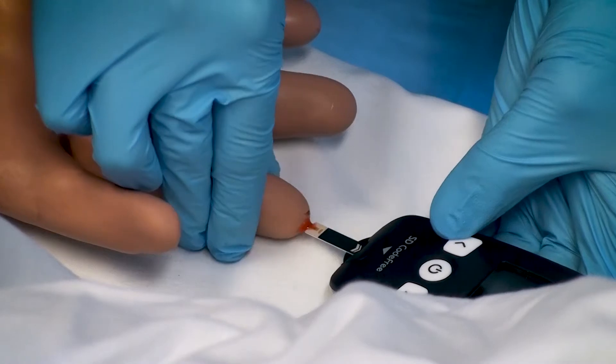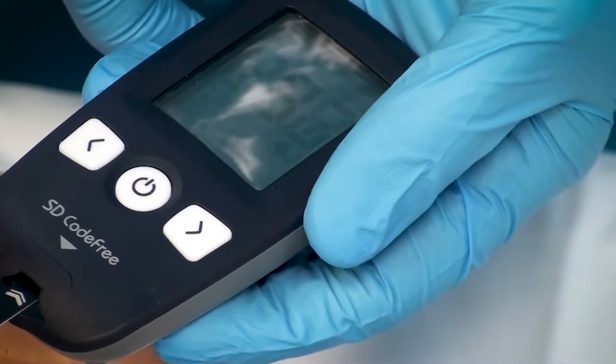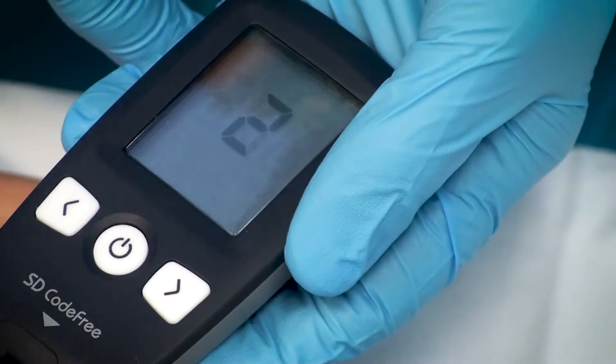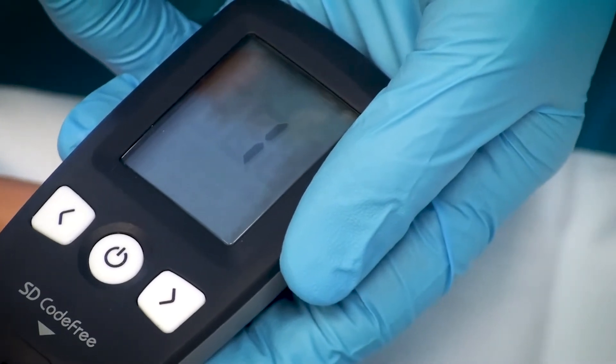Apply that drop of blood to the test strip in the meter and wait for the reading. The meter will count down and then display the patient's blood sugar.